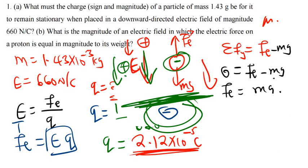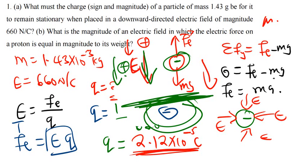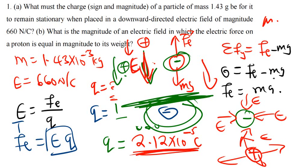The charge has to be negative so that it is repelled by the negative surface below and remains stationary. We cannot make this charge positive because then it would be attracted downward. So the sign is negative and the magnitude is 2.12 × 10⁻⁵ coulombs. We are done with Part A.